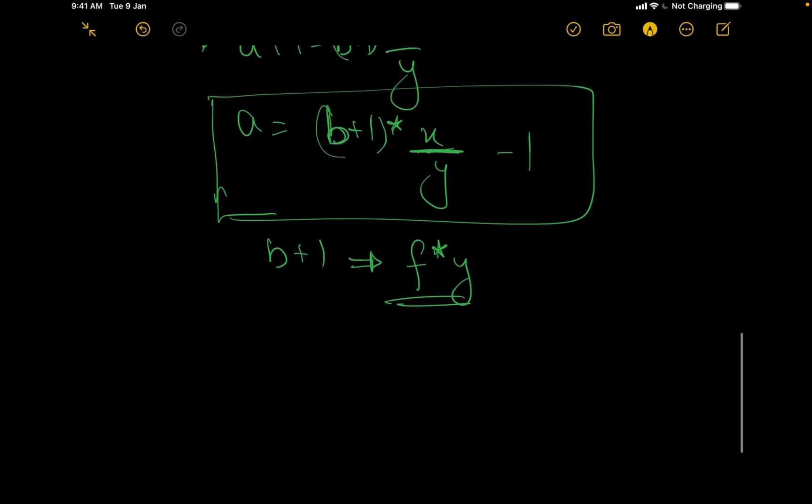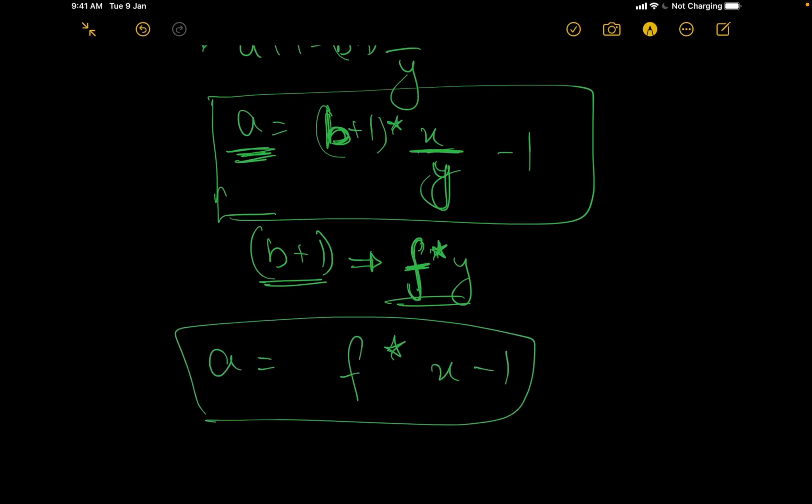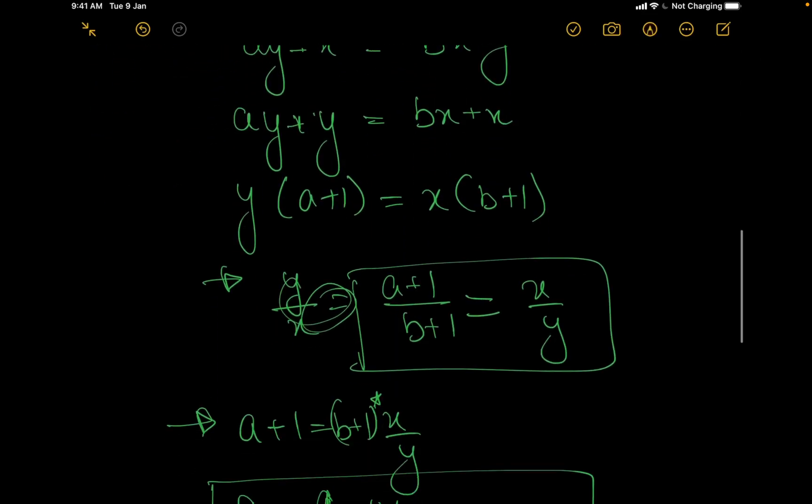Because we can assign any value to b, we are just concerned with a as of now. It would be beneficial if we assign b plus 1 something so that it could cancel out y itself. So we get a is equal to f times x minus 1. We got this equation now. This actually is the most important thing here.